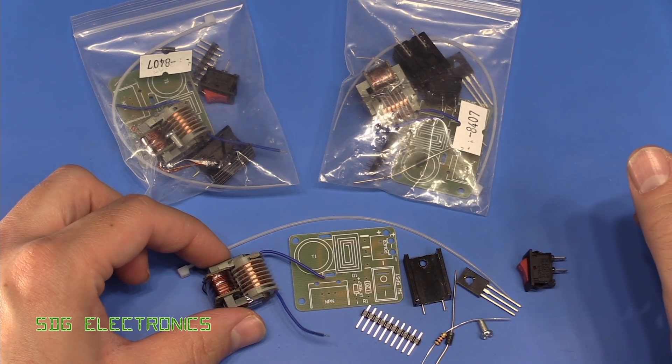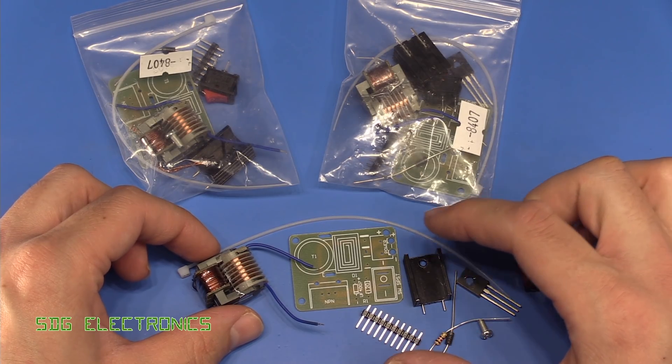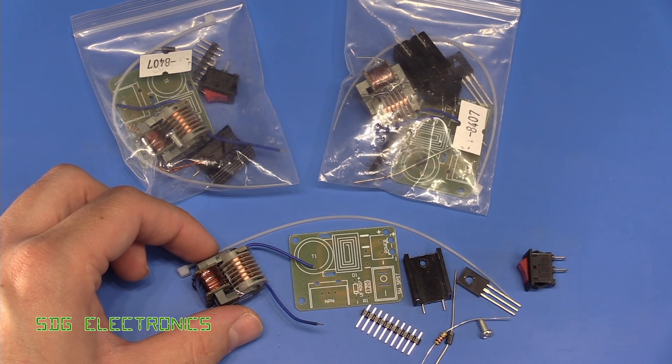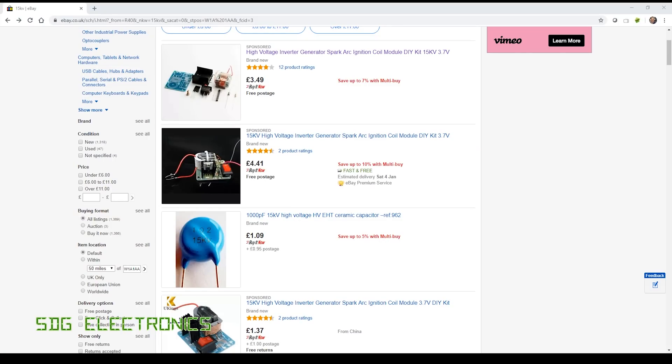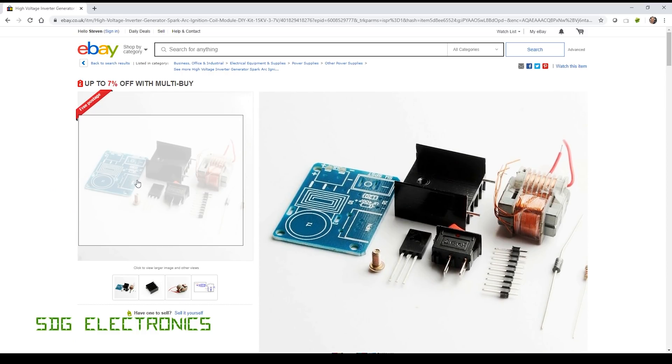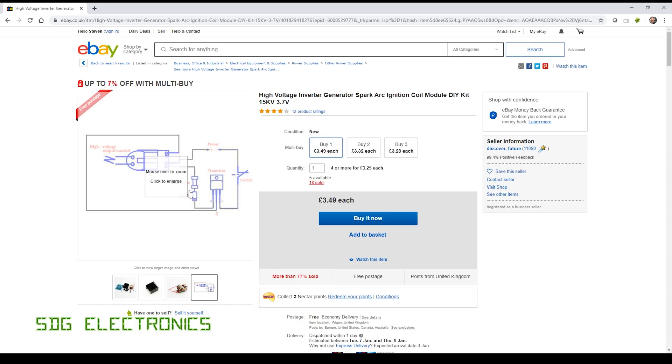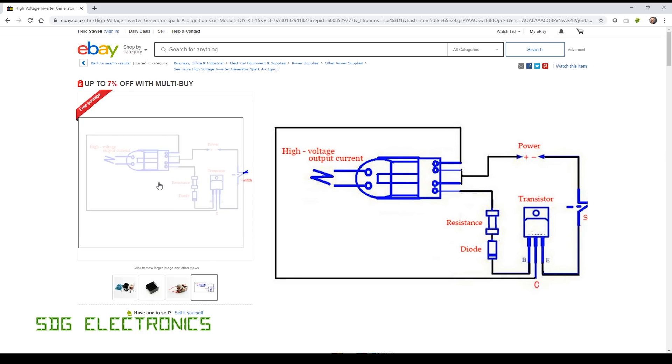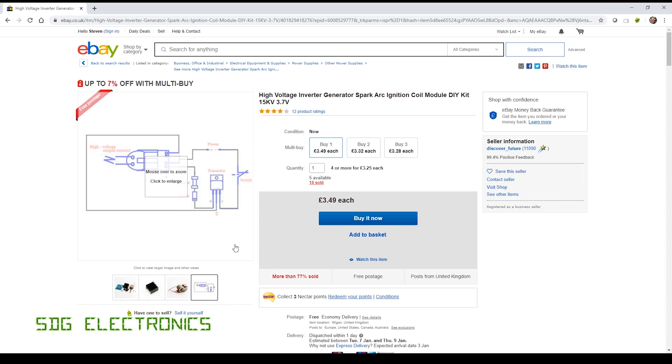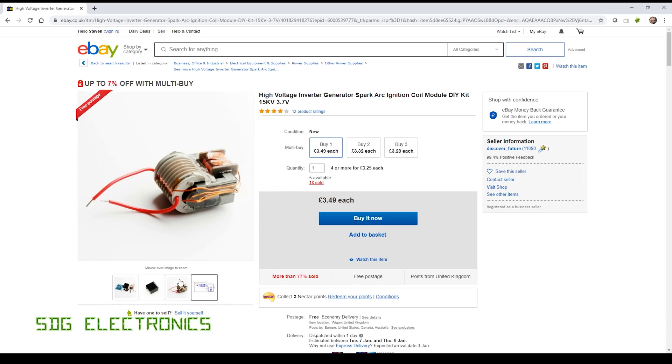So what this is, is a little high voltage inverter PCB. So if you have a little look on eBay, I'm not sure exactly which seller I bought it from, but they all look to be very similar. What you get is the PCB, some components and a transformer. And the idea is that you put in something like 3.7 volts from a lithium cell and you get up to 15,000 volts at the output of the transformer.